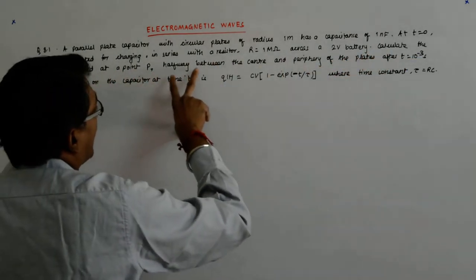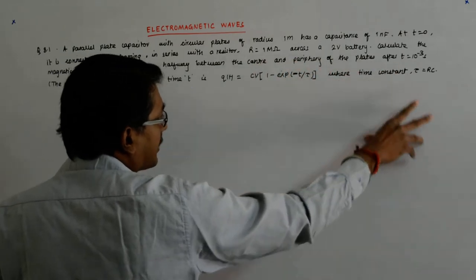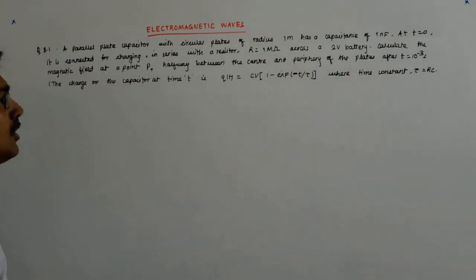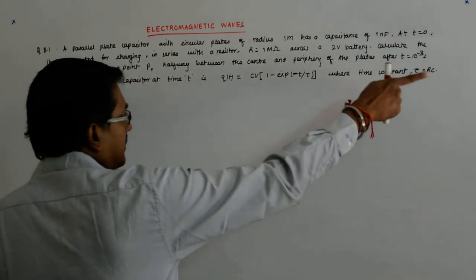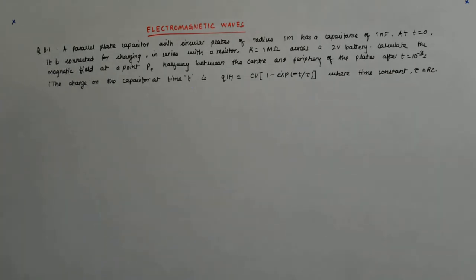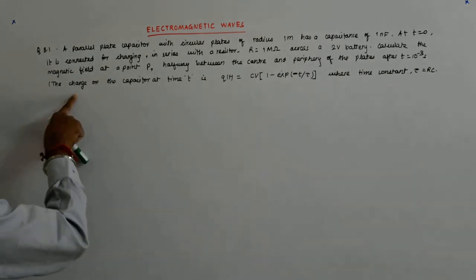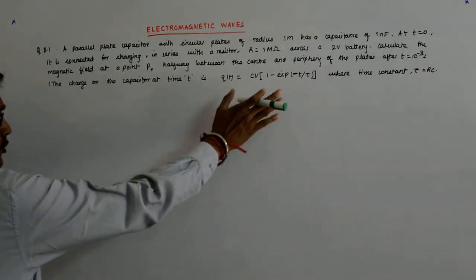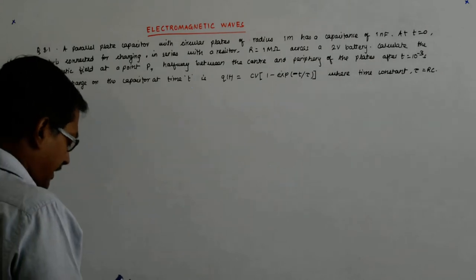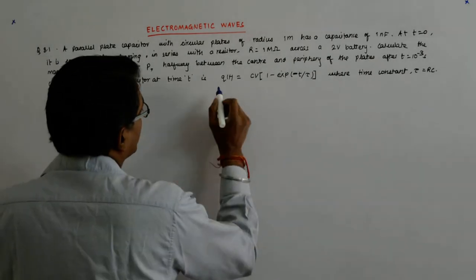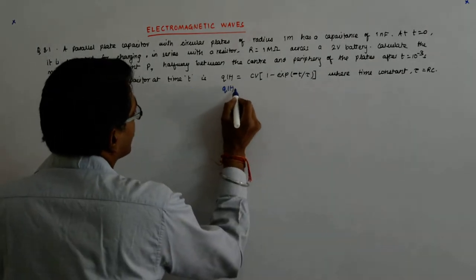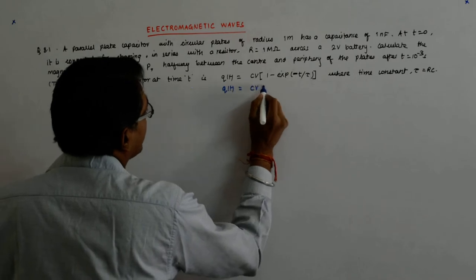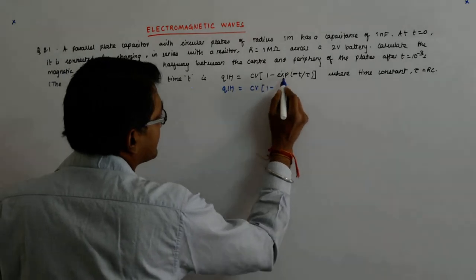Calculate the magnetic field at point P halfway between the center and periphery of the plates after T equals 1 millisecond. The charge on the capacitor at time T is Q(T) equals... I'd like to clarify that when you say Q which is a function of time is given by CV into 1 minus exponential, this means e to the power minus T upon tau.